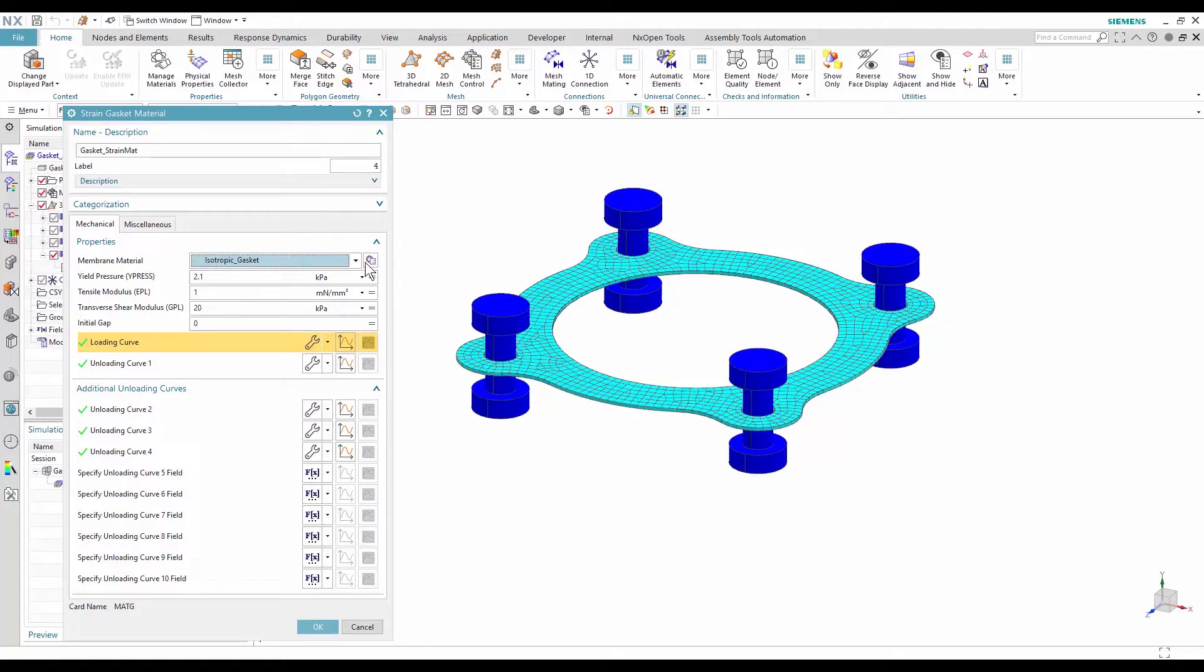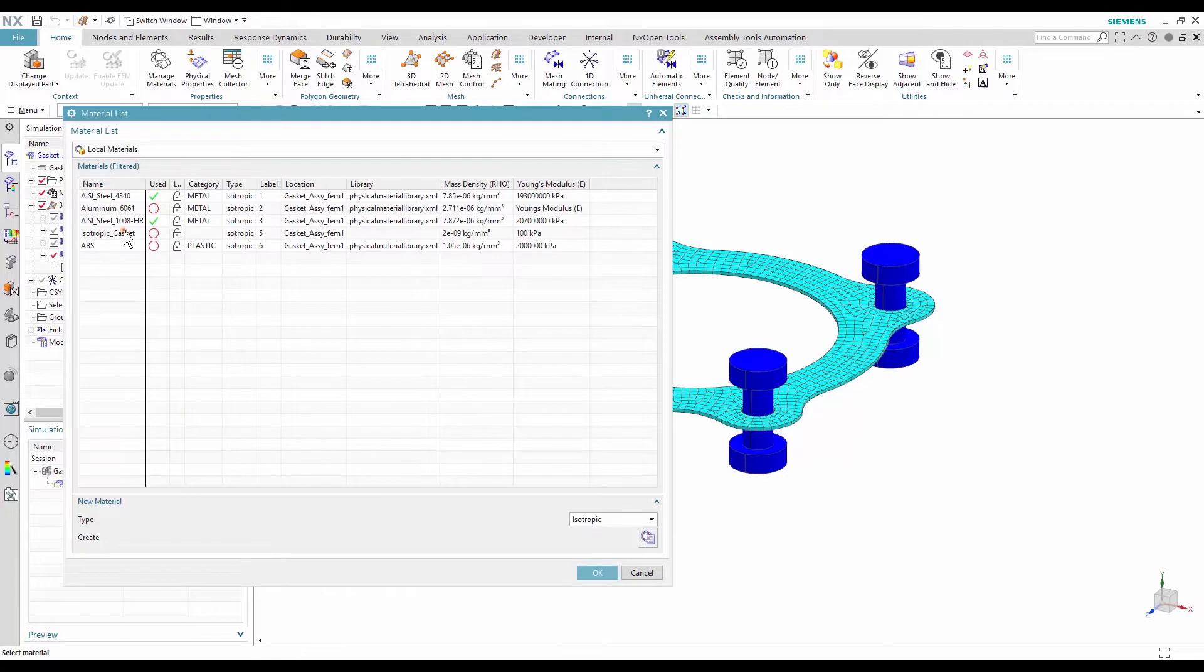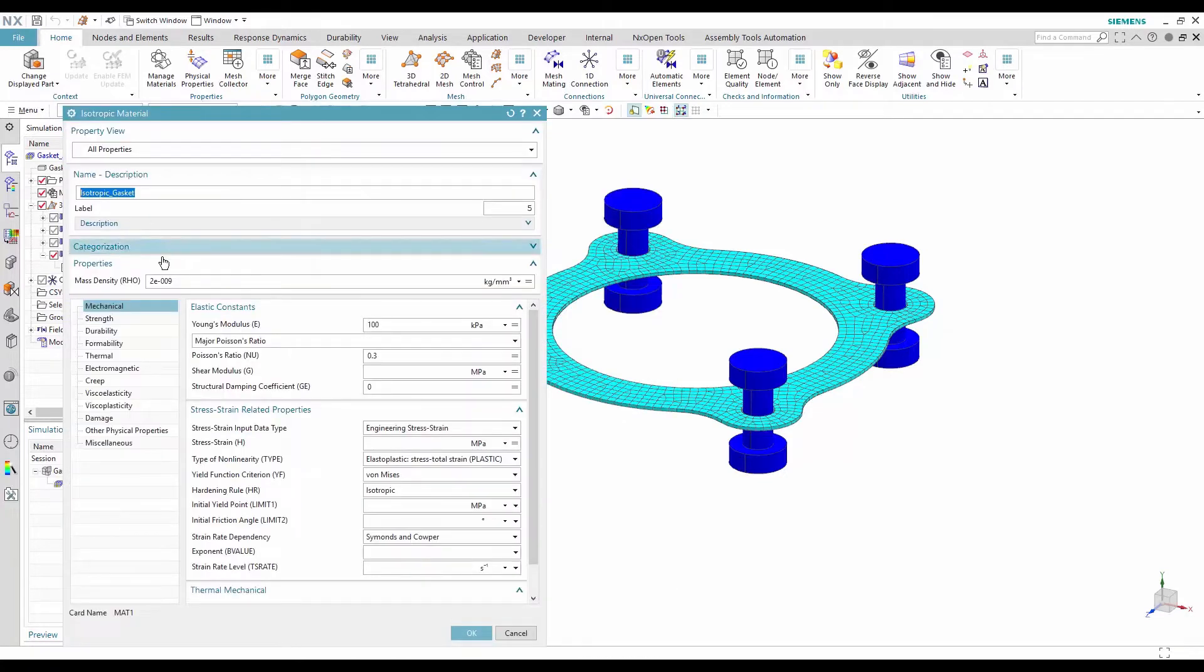The first property on the card is a membrane material. The membrane material is a simple isotropic material that is used if the gasket is in tension.